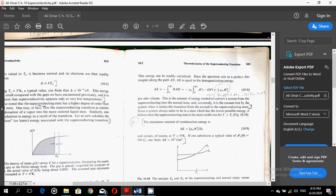This energy can be readily calculated since the specimen acts as a perfect magnet around the path AN. So delta E can now be calculated and we can say that delta E is the demagnetization energy. So as the integrals shown here, equal to 1 over 2 mu nought H squared per unit volume. This is the amount of energy needed to convert a system from the superconducting into the normal state and conversely, it is the amount lost by the system when it makes the transition from the normal to the superconducting state.